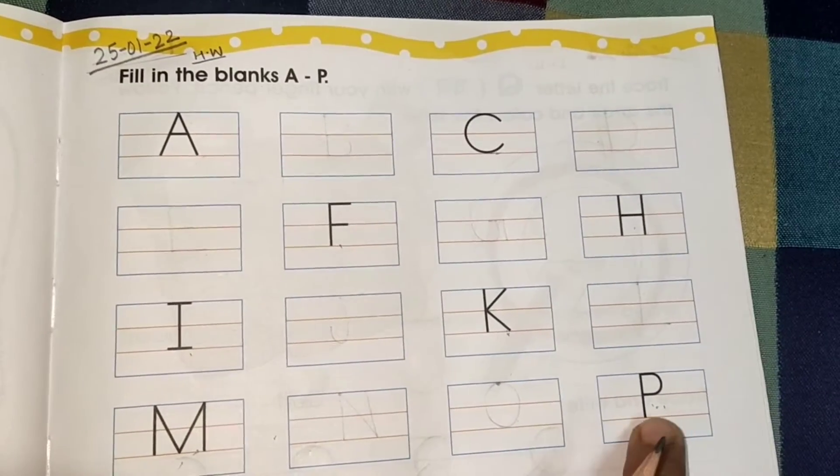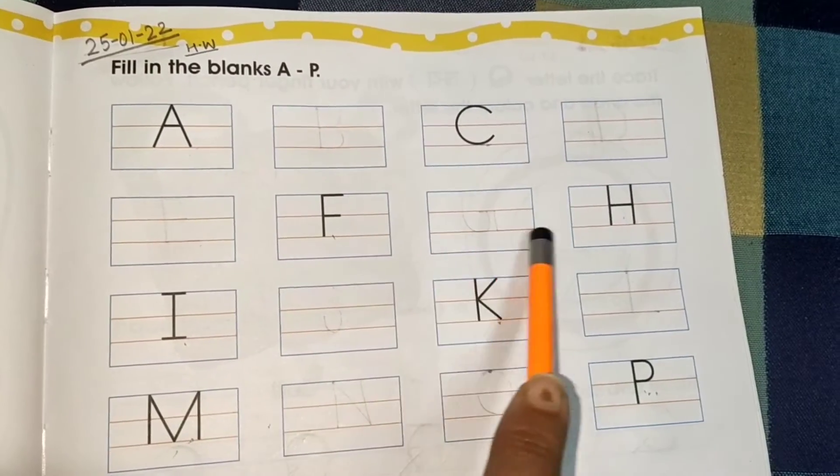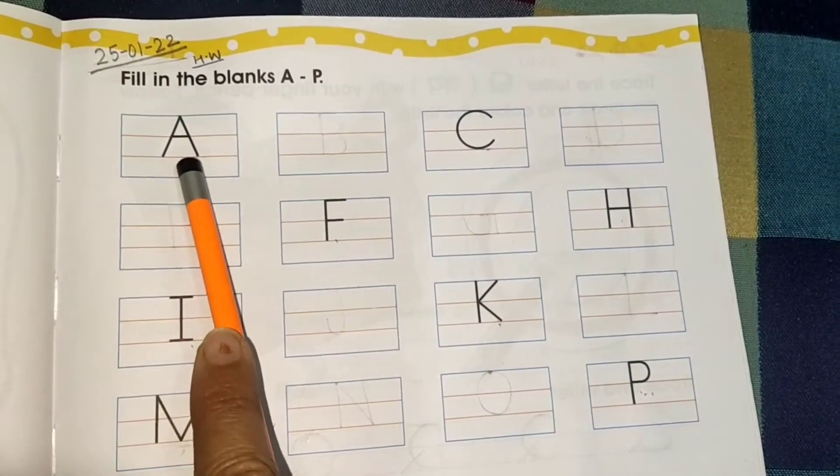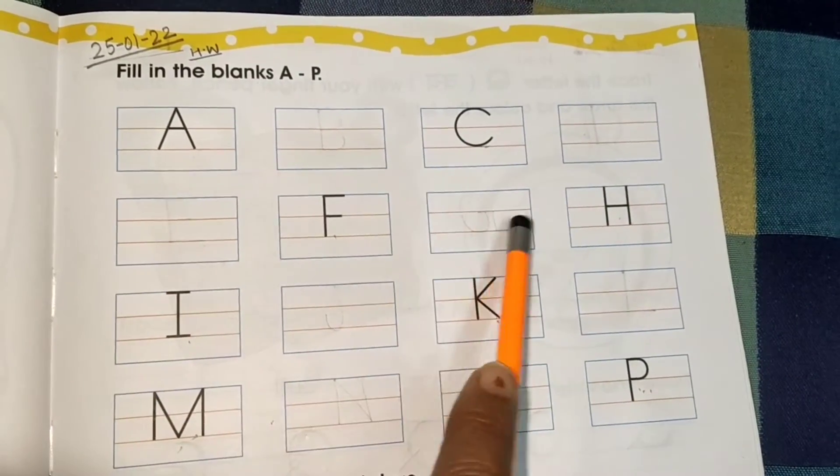Alphabet A se leke P tak yeh dekho. Yahan per kuch-kuch alphabets mention kiye hue hai aur kuch missing hai. Dekho, beech mein khali khali hai na?